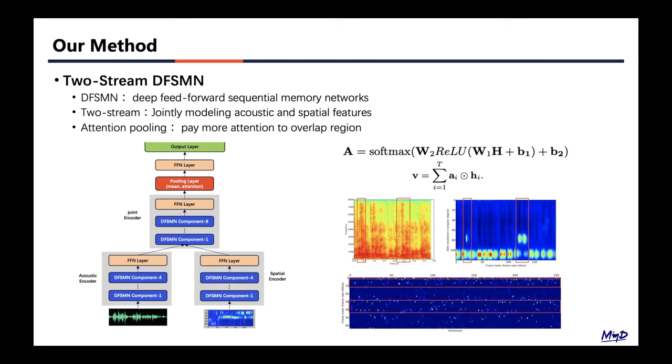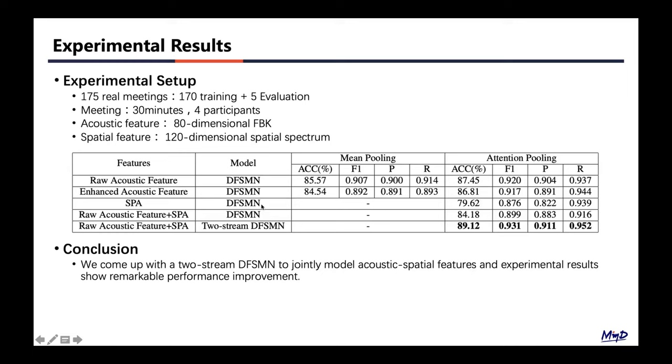For the experiments, we use the microphone array to record 175 real meetings. Each of the meetings lasted about 30 minutes with four participants. For the acoustic feature, we use the 80-dimensional f-bank, and the spatial feature is the 120-dimensional spatial spectrum.